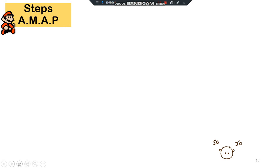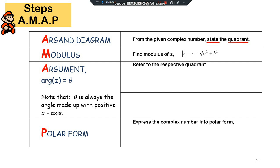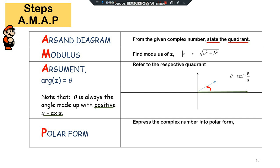Theta is the argument of z — it's an angle. I'll introduce a method called AMAP. A stands for Argand diagram — you have to know and state which quadrant your complex number is in. M stands for modulus: find modulus of z, so you calculate r = √(a² + b²).